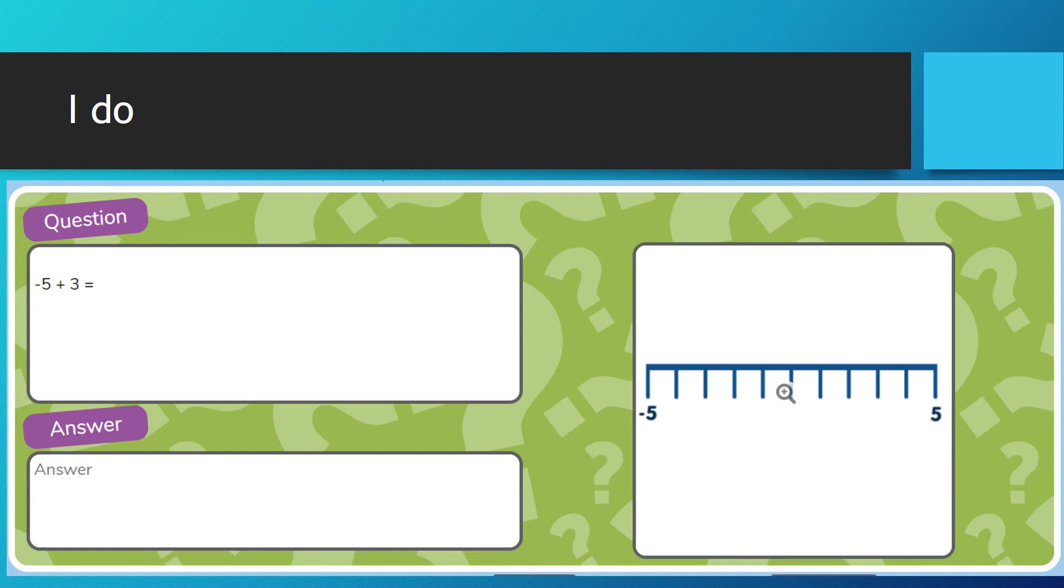This first question: minus 5 add 3. So if you're at minus 5 and you're adding 3, you go 1, 2, 3. What number do we have now? Well the answer would be minus 2. So you'd write your answer in the answer box and then click done.